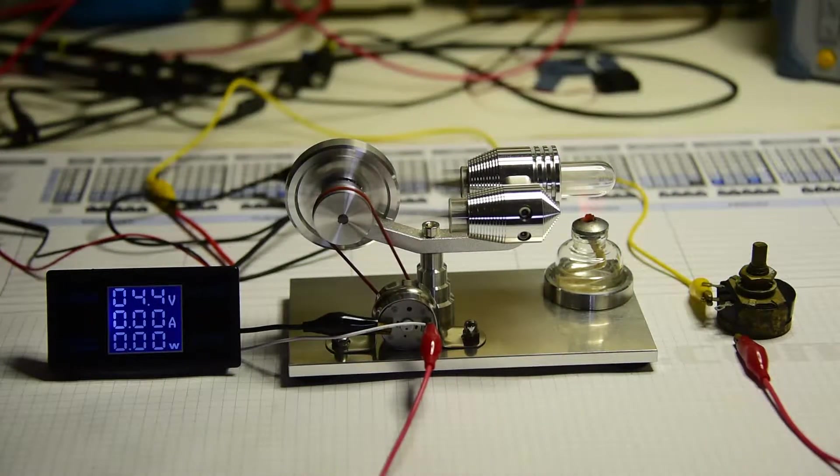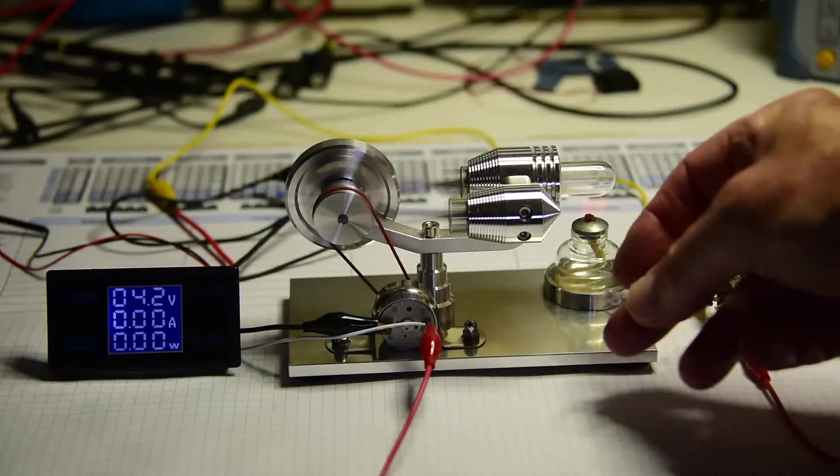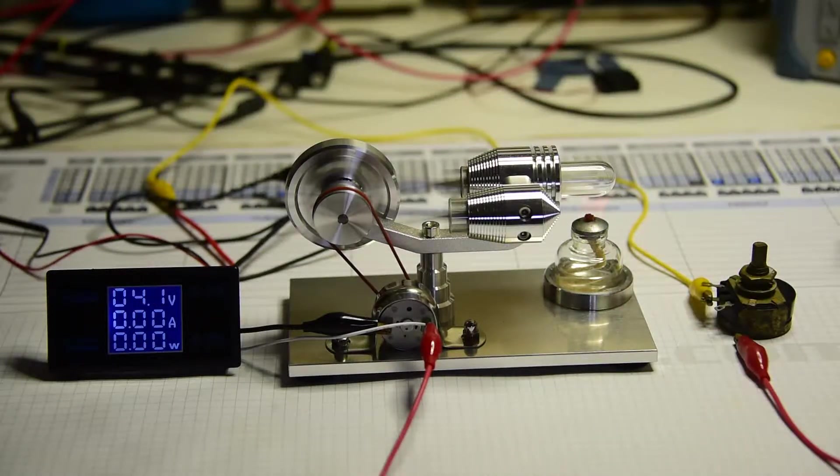This is a test of my stainless steel Stirling engine which includes a little DC generator. They normally supply a little flashing LED to show that electricity has been generated, but I was interested to see how much power this setup would generate.